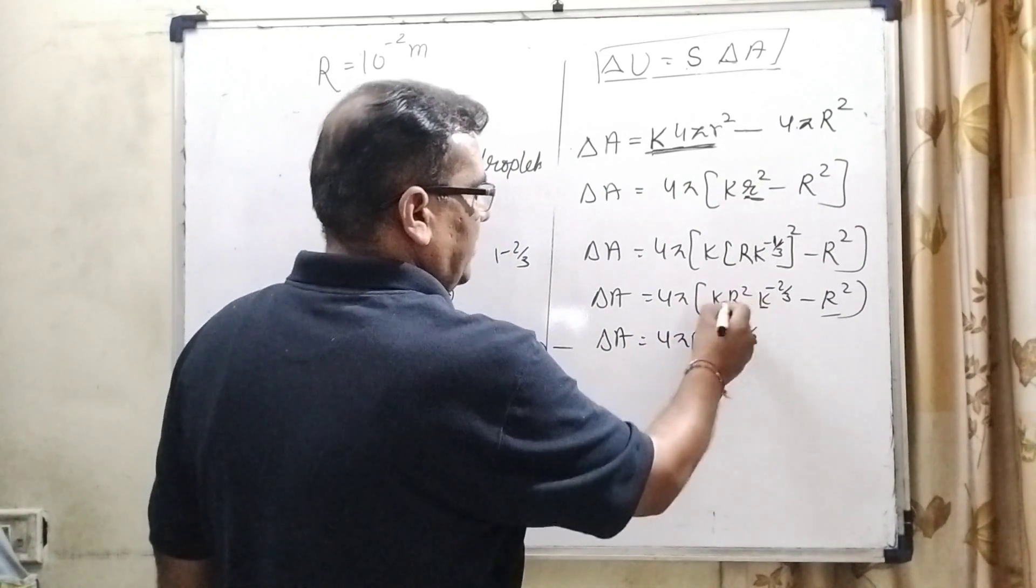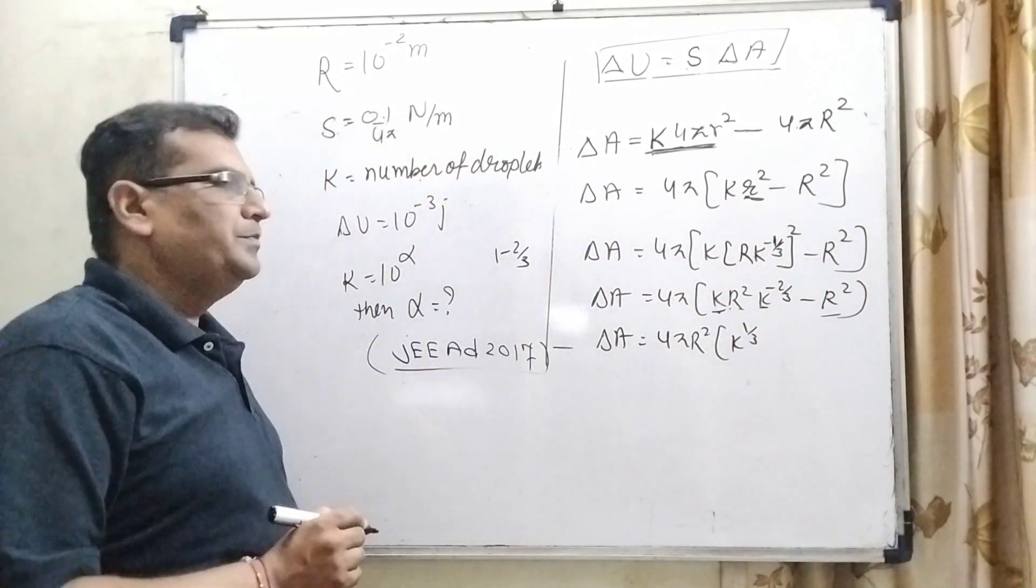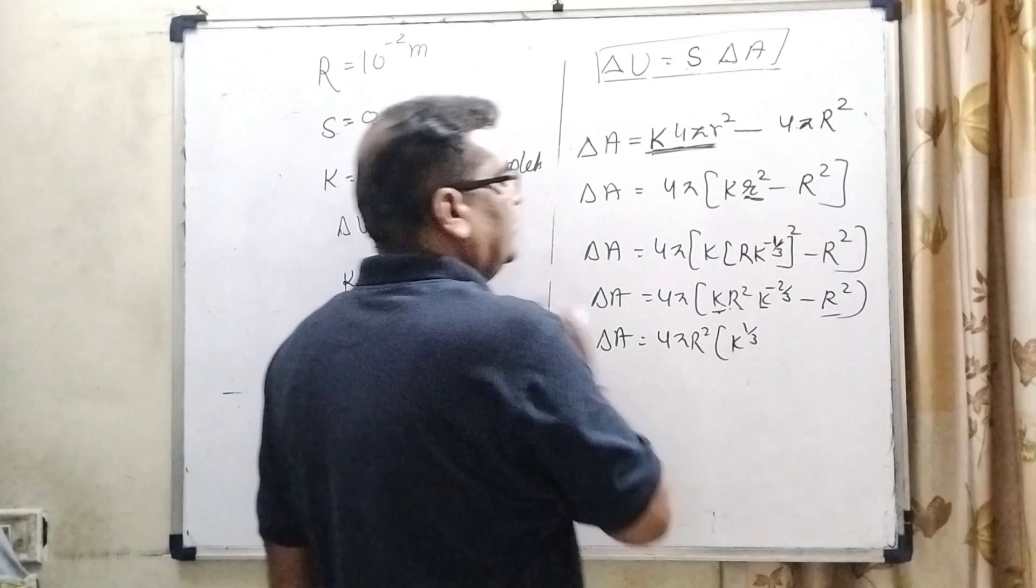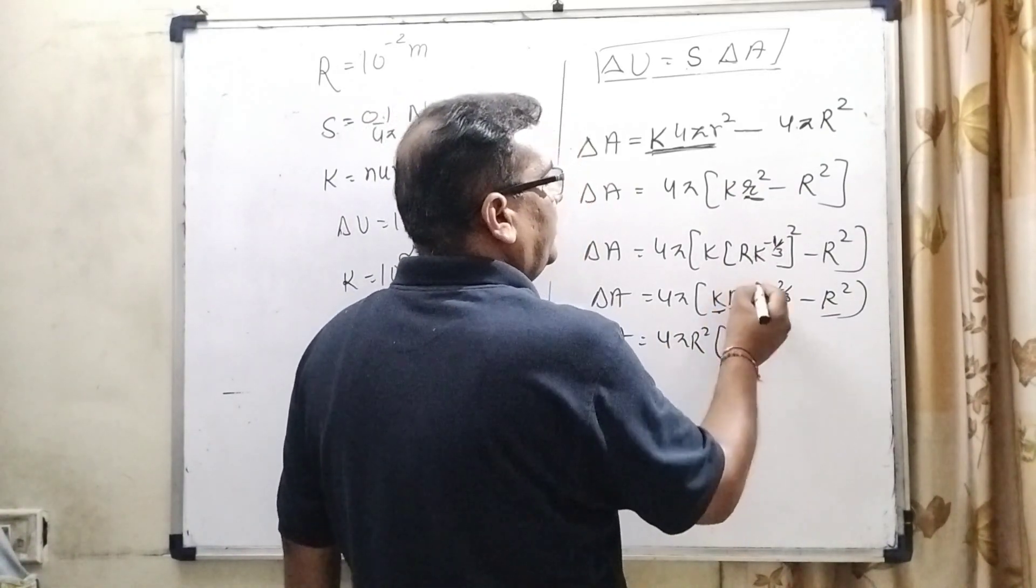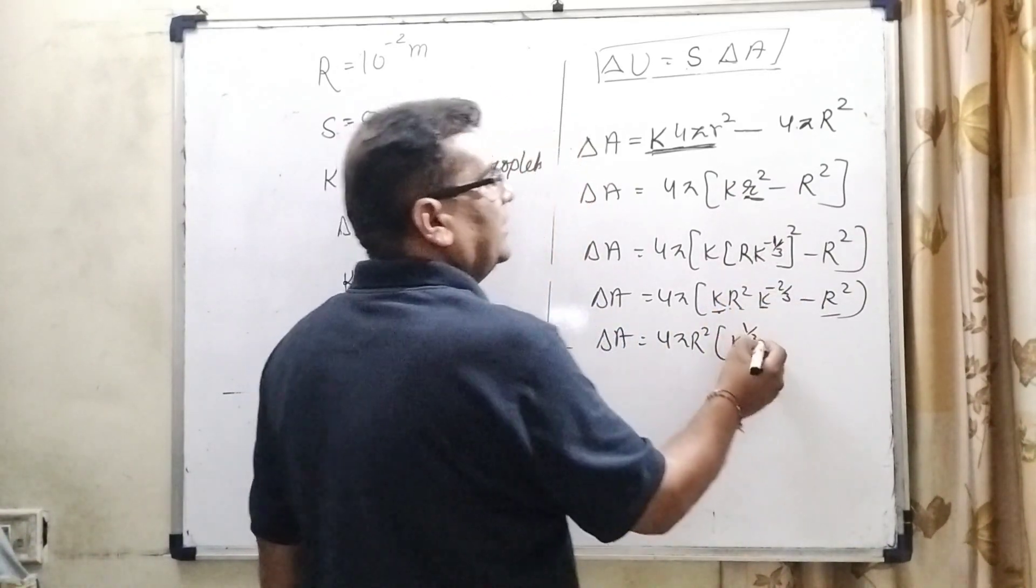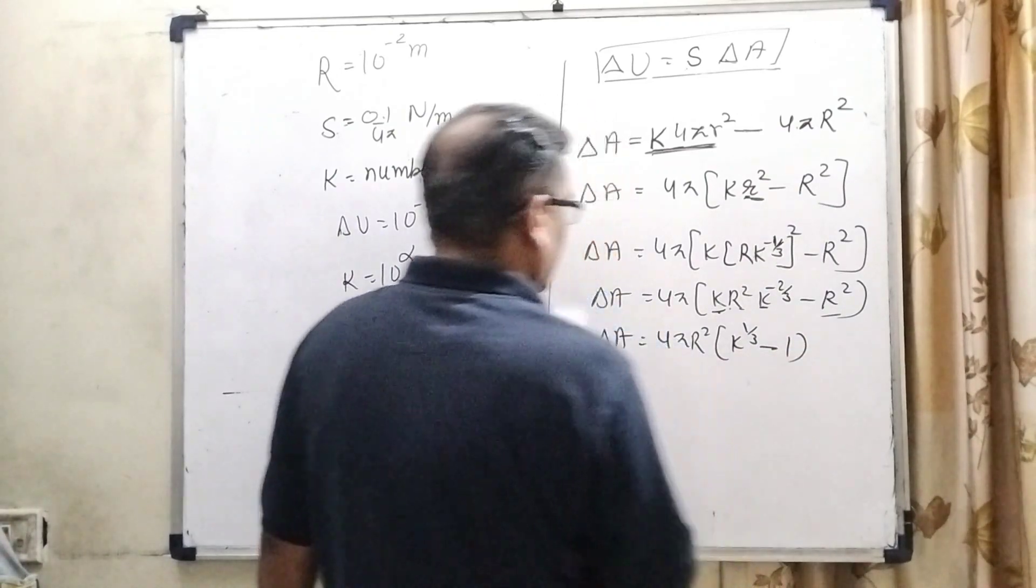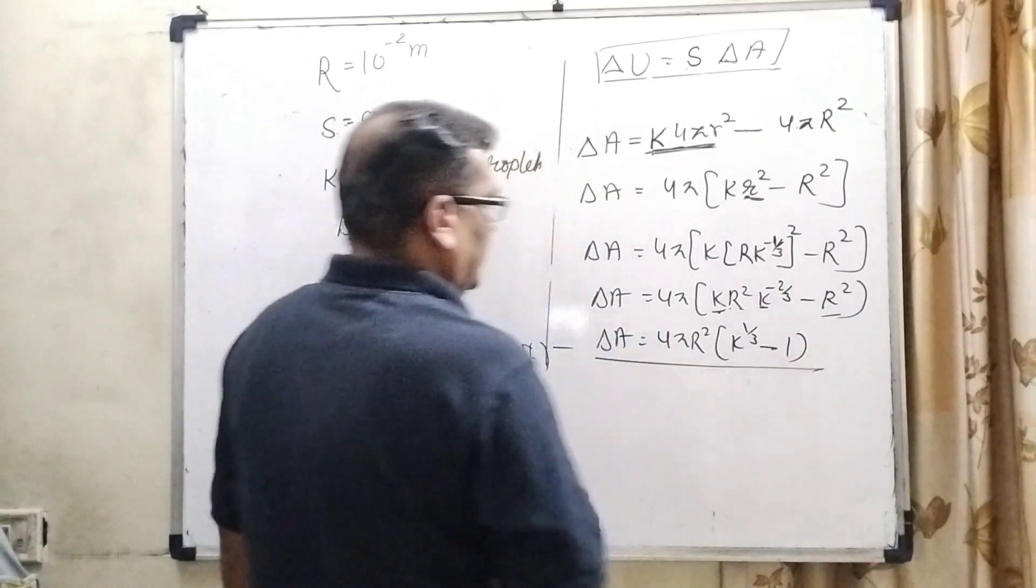Delta A equal to 4 pi R square get common and here k raised to power 1 minus 2 by 3 means k raised to power 1 by 3. Now, you can see that same base and they are multiple. So therefore, using the exponent law 1 minus 2 by 3 means 1 by 3 minus 1. This is the changing area.